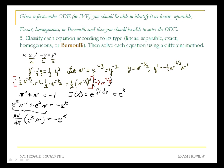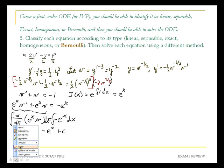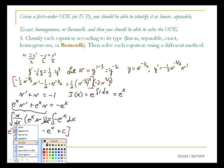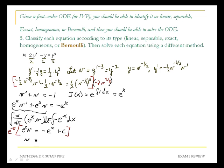And to undo that derivative, you want to integrate with respect to x — integrate on both sides. On the left side, you get e to the x times v. On the right side, we get negative e to the x plus c. And then to solve for v, we'll multiply through by e to the negative x. That'll give us v equals negative 1 plus c e to the negative x.